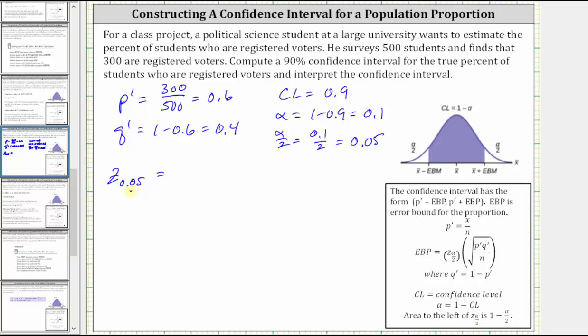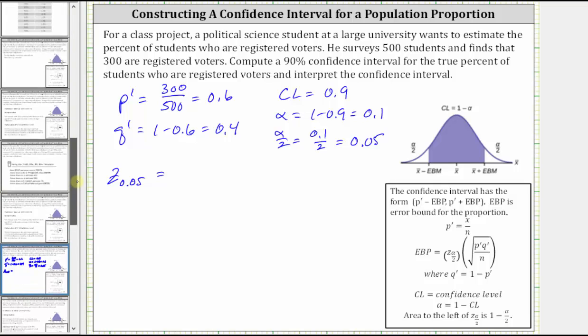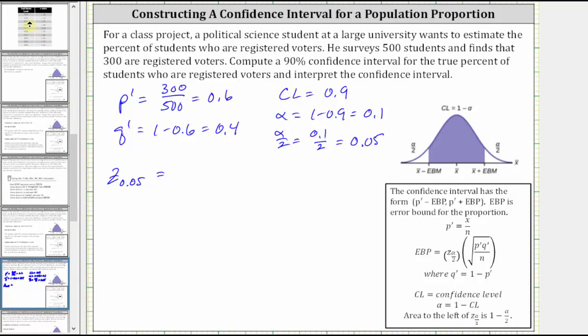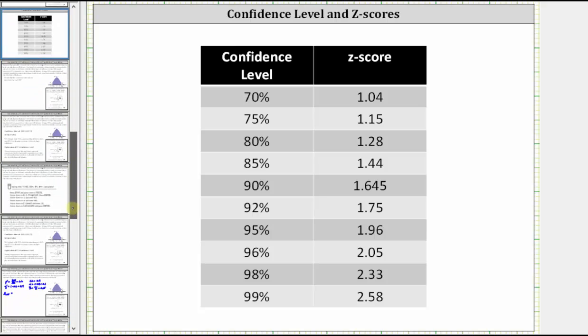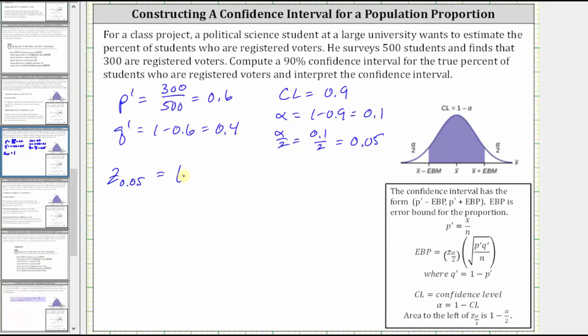If we are able to use a table to find the z-score, we can simply go to the table, find the confidence level, and see the z-score is going to be approximately 1.645. So let's go ahead and write that down, and then we'll verify using the TI-84.